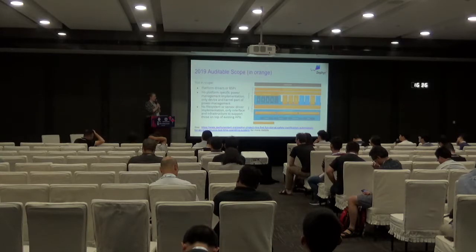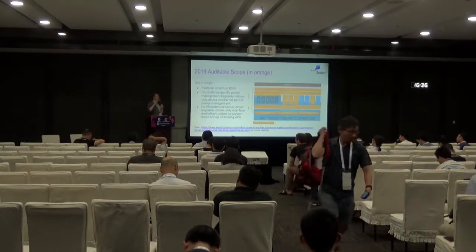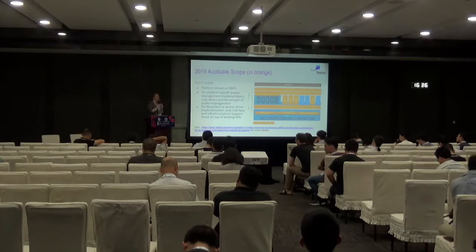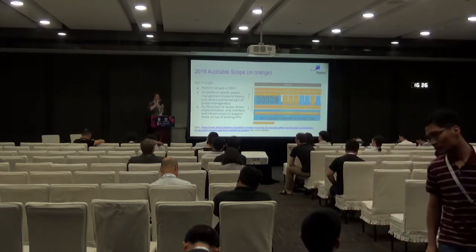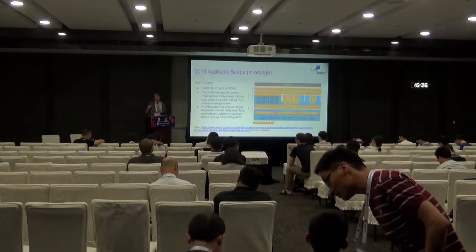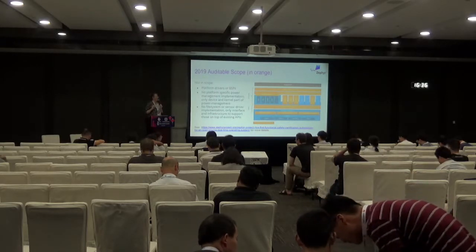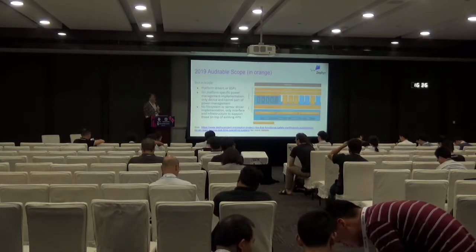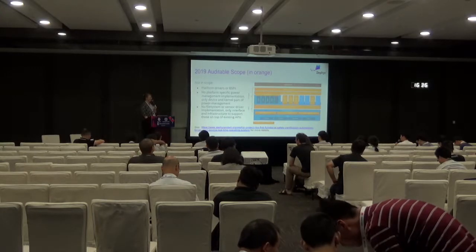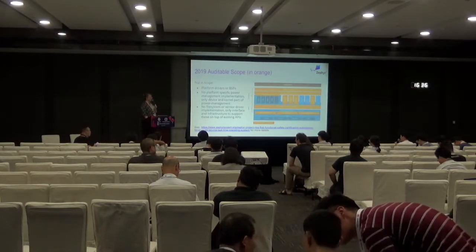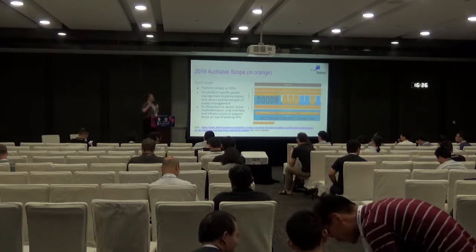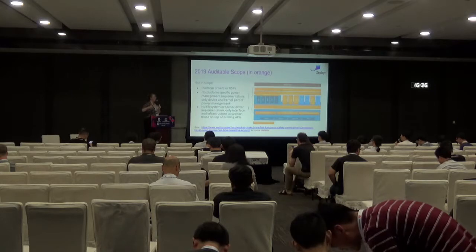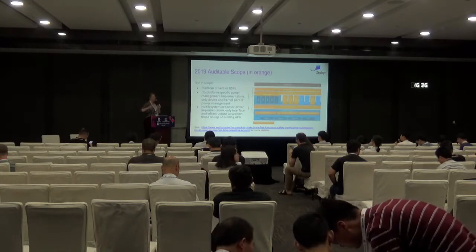The key for certification is you have to look at the entire system. What we're trying to do is get our component ready to be put into an analysis of the entire system. We won't be blanket 26262 ready, but we will have enough there that people can go after 26262 without a lot of cost. Another question is about architecture — Zephyr supports memory protection, which depends on the architecture, whether there's an MPU or MMU unit available. It's very much architecture specific what memory protection features are enabled based on what's in the hardware.